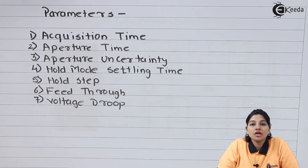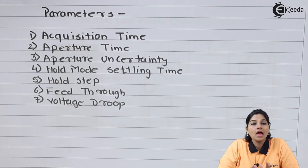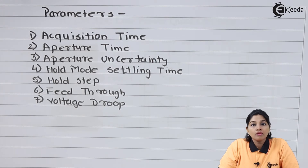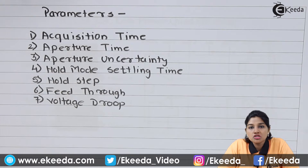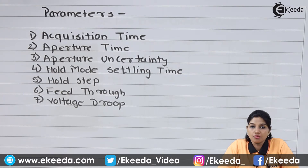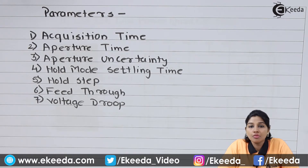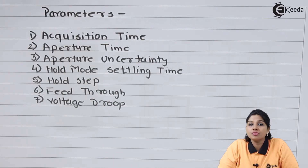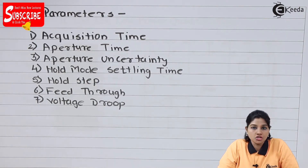The aperture time is mainly because of the propagation delay from the driver circuit and propagation delay from the switch circuit. The acquisition time depends upon RC time constant and maximum output voltage, whereas the aperture time depends upon the propagation delay.